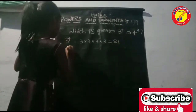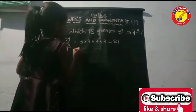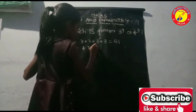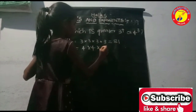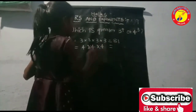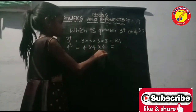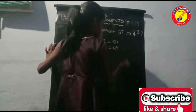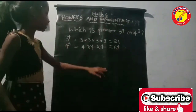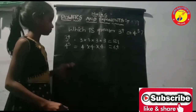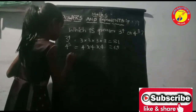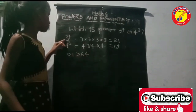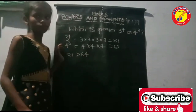And 4 to the power of 3: 4 into 4 is 16, 16 into 4 is 64. So, 81 is greater than 64. Therefore, 3 to the power of 4 is greater than 4 to the power of 3.